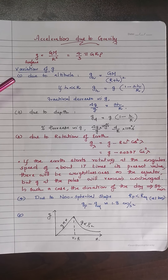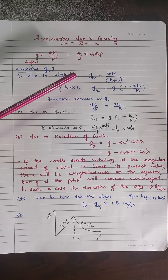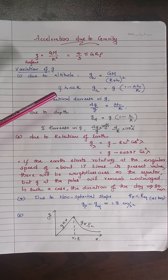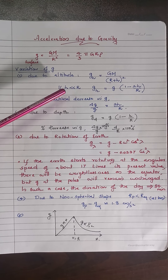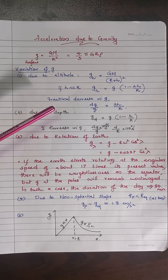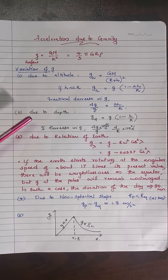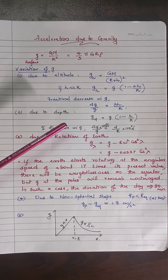Now consider the variation of g with altitude. At height h from the surface of Earth, gₕ = GM/(R+h)². Applying the binomial theorem when h << R, we get gₕ = g(1 − 2h/R). The fractional decrease is Δg/g = 2h/R. Due to depth, the relation is g_d = g(1 − d/R), with the percentage decrease being (d/R)×100%.